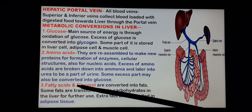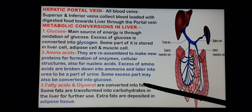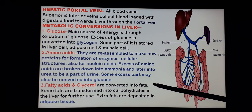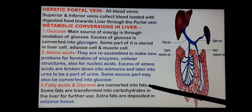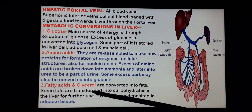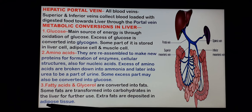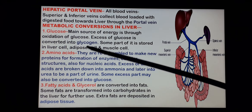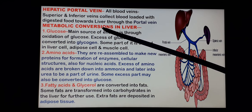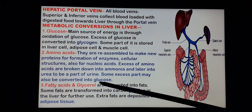Fatty acids and glycerol are converted into fats to be utilized in the body, such as the phospholipids of cell membranes as well as cholesterol. Some fats are transformed into carbohydrates in the liver for further use, and extra fats are deposited in the adipose tissue. These are the processes going on during the assimilation of nutrients in the body.